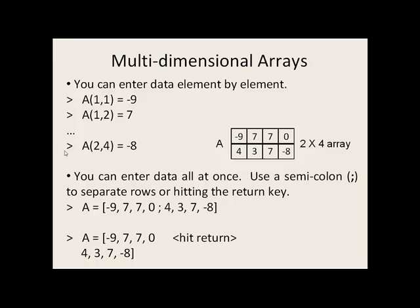Alternatively, you can enter data all at once. You can use a semicolon to separate rows or use the return key. So in this example here, we're going to fill the first row in with negative 9, 7, 7, 0. The semicolon means we're going to go down to the second row. And we fill in, in the second row, 4, 3, 7, negative 8.